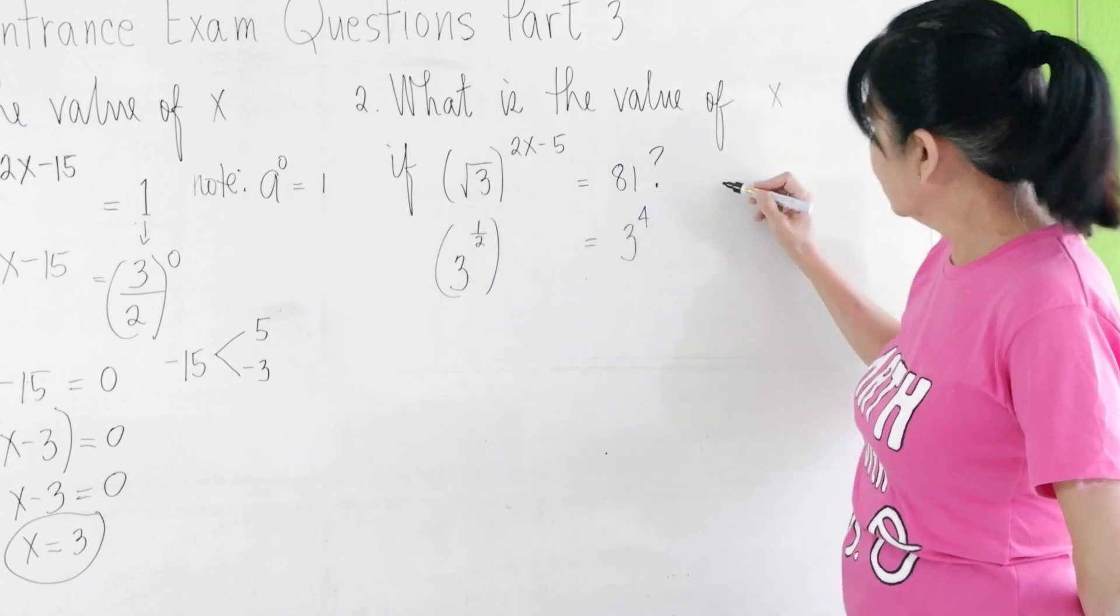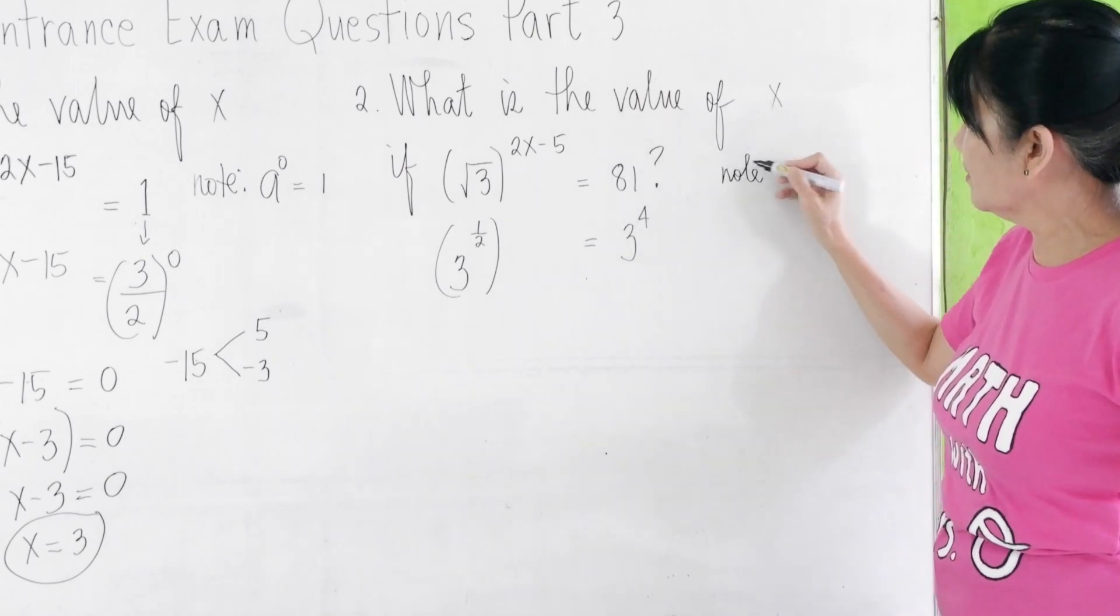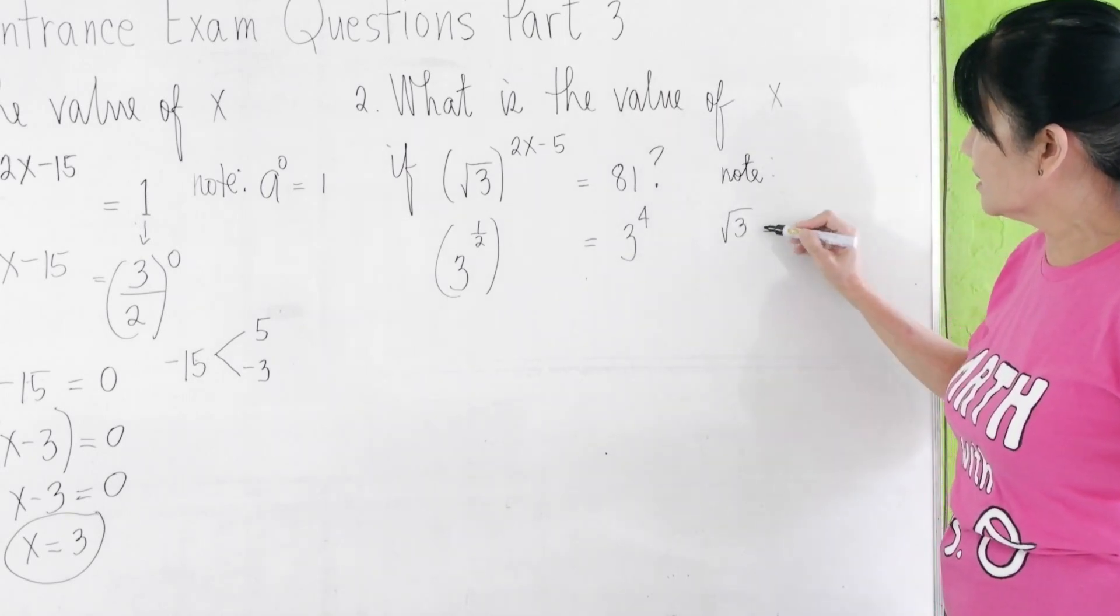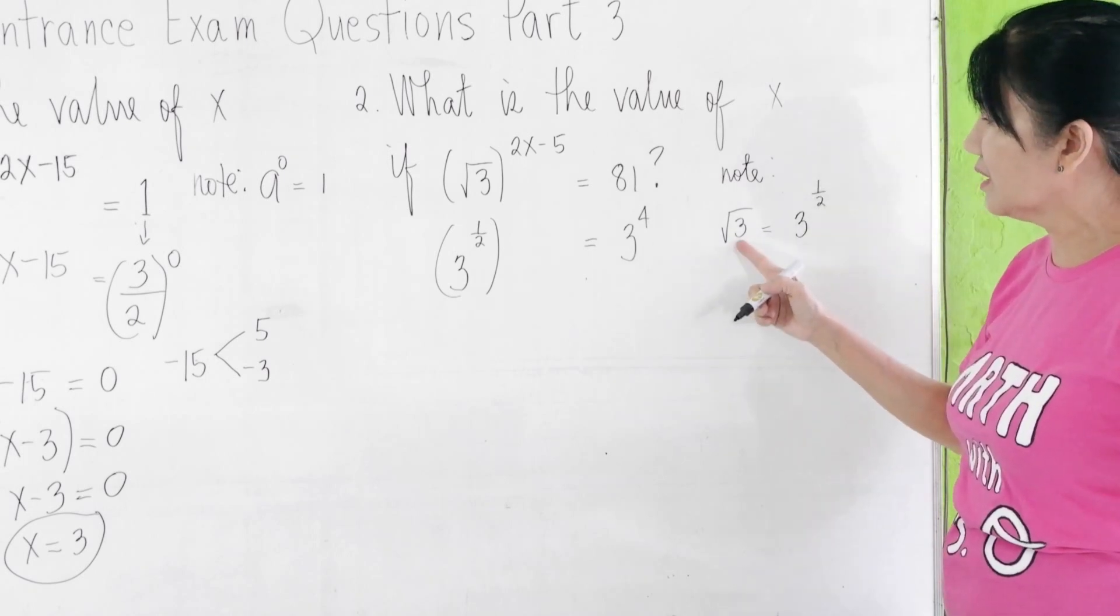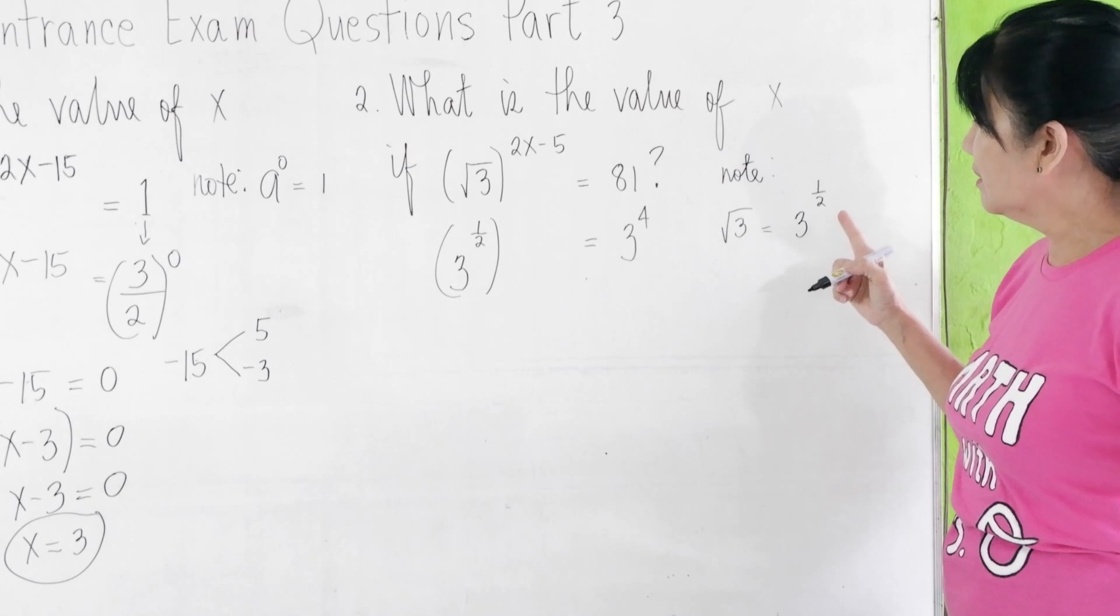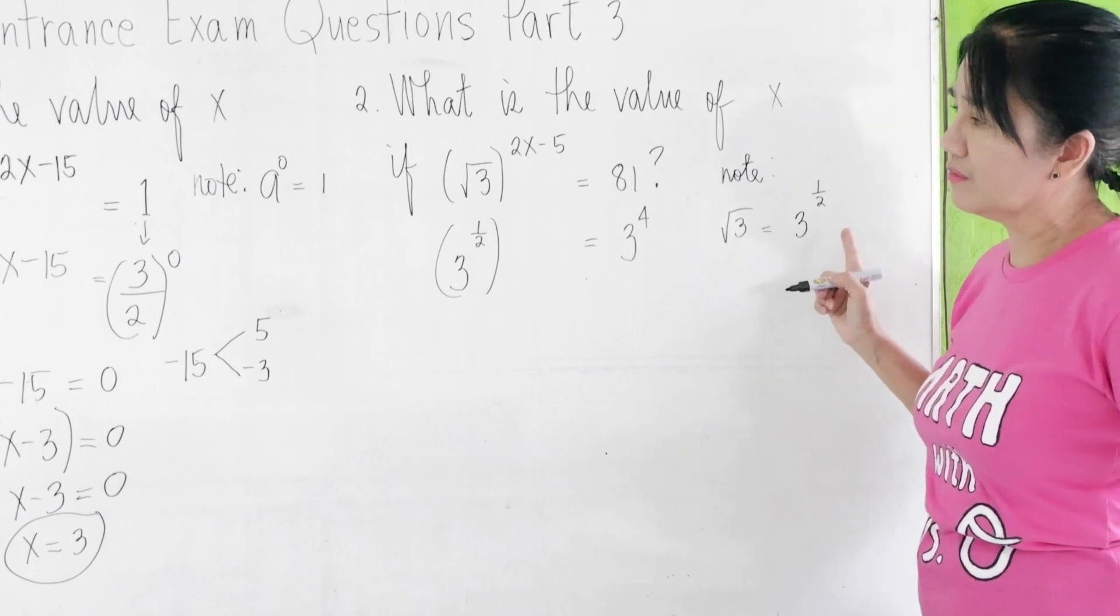So, take note of that. Square root of 3 is equal to 3 raised to the 1/2. This is the radical form and this is the fractional exponent form.